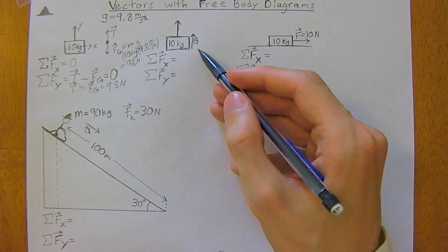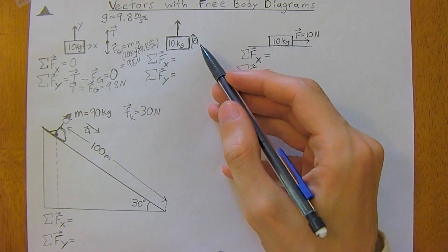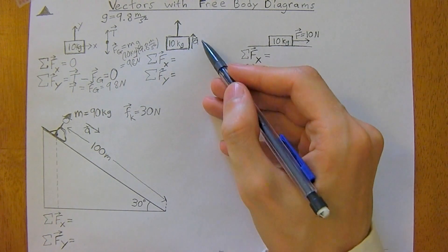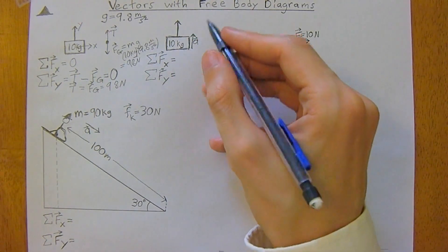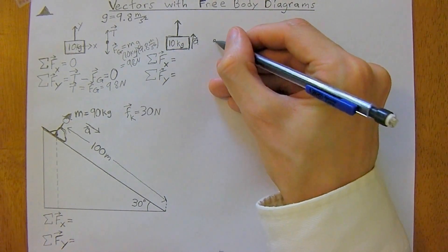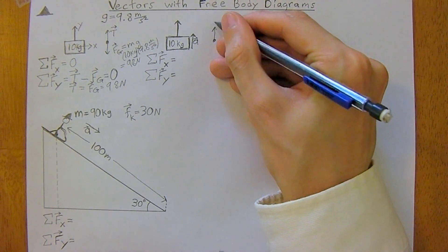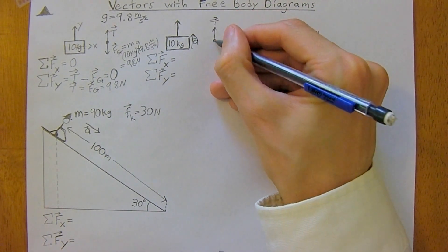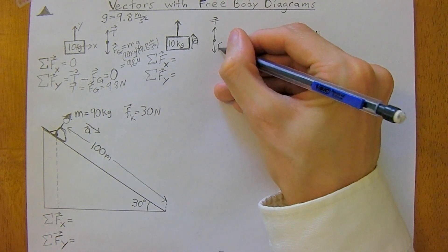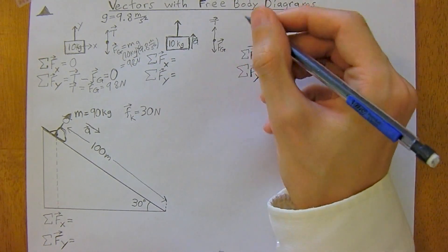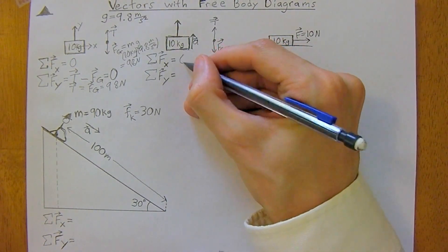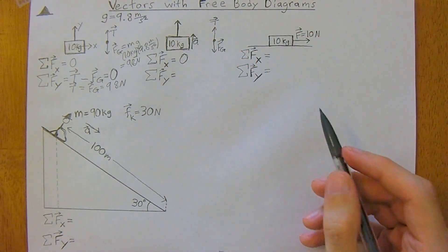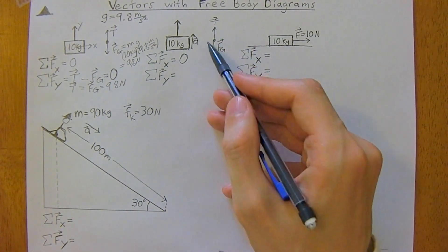So we have a similar example here. I just want to get you used to the notation. Except now we have an acceleration upwards on the y-axis. So same thing. We have the tension up. We have the counteracting force of gravity down. There's nothing happening on the x-axis. So it's just equal to zero again. There's no forces on the x-axis here.